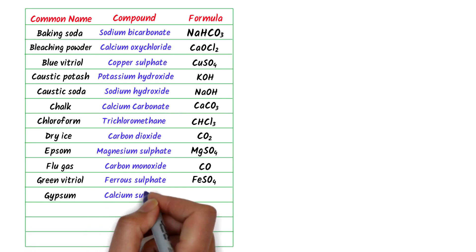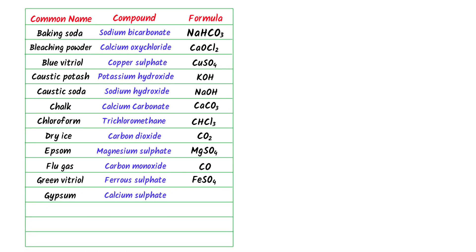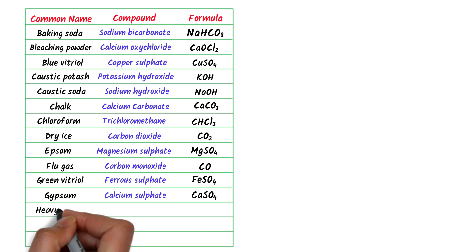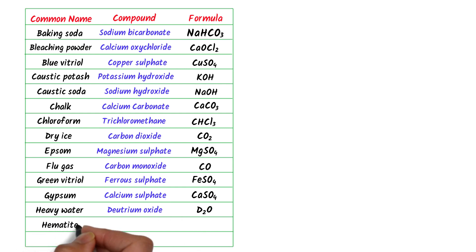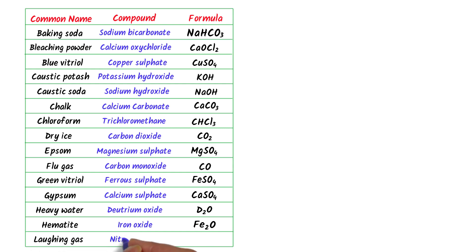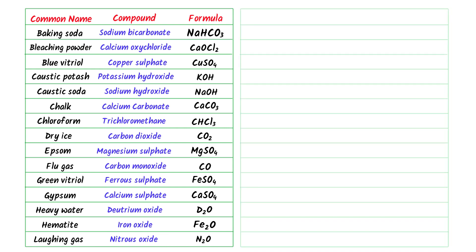The thirteenth is heavy water — it is deuterium oxide and its chemical formula is D2O. The fourteenth is hematite — it is iron oxide and its chemical formula is Fe2O3. The fifteenth is laughing gas — it is nitrous oxide and its chemical formula is N2O.